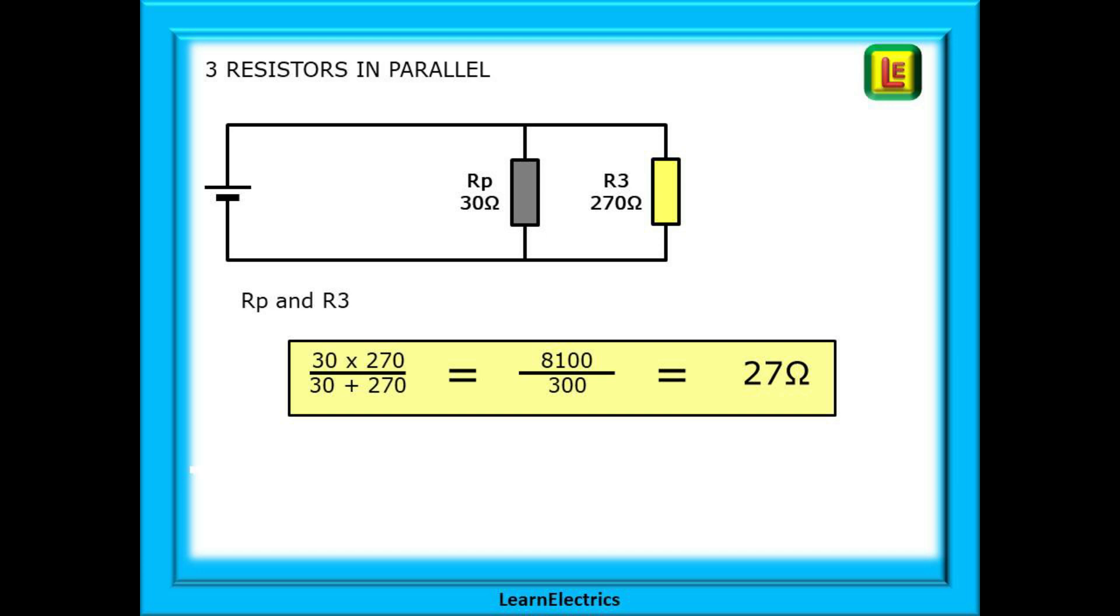Here is the calculation. Multiply the top row, add the bottom, and divide the bottom row into the top. Our answer, the total parallel resistance, is now 27 ohms. And notice that 27 is smaller than any of the original values.